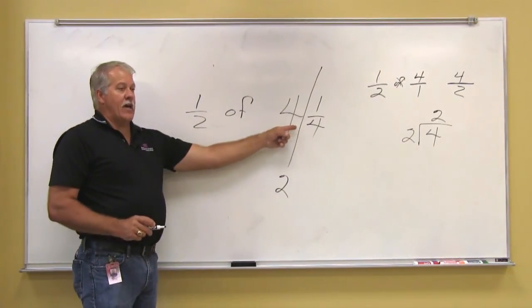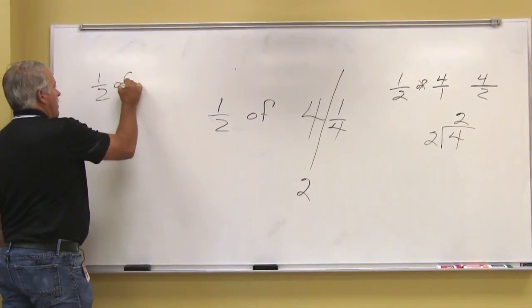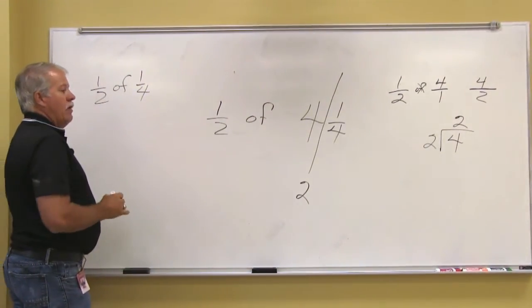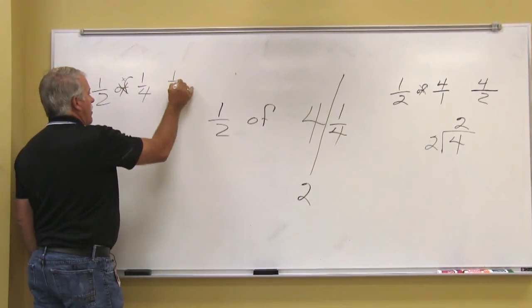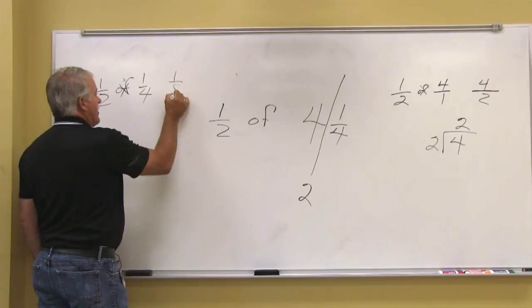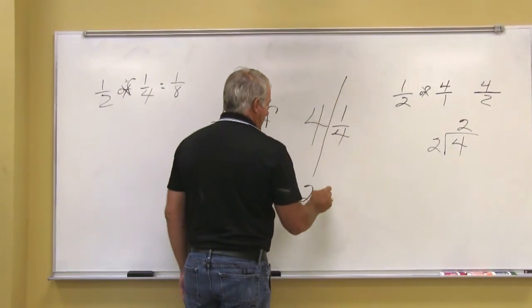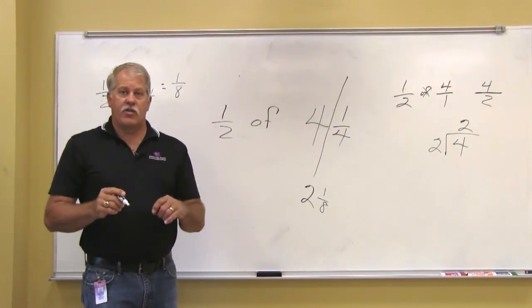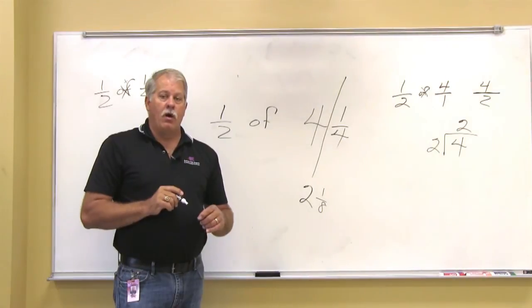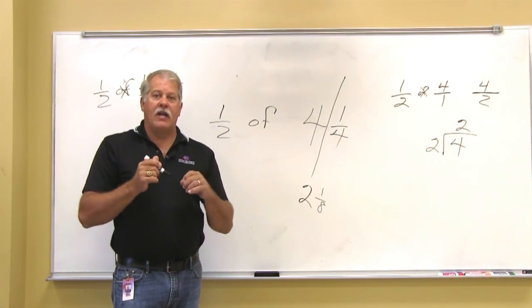Now we can do the fraction part of it, which is one half of one fourth. Same thing, it's times: one times one is one, and two times four is eight, so that's equal to one eighth. So we know that half of a fourth is an eighth, so our final answer is two and one eighth. Hopefully that will clarify any problems that you might have in finding half of a number.